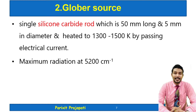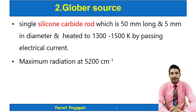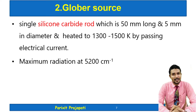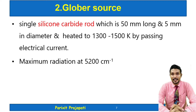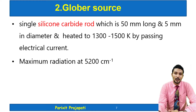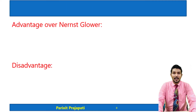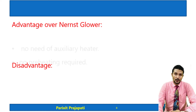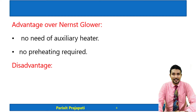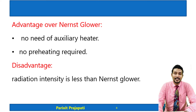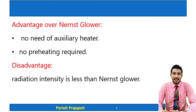The Globar source is a single silicon carbide rod having a length of 50 mm and diameter of 5 mm. It is heated at 1300 to 1500 Kelvin by passing electric current and produces maximum radiation around 1800 reciprocal centimeters. The advantage over the Nernst Glower is that an auxiliary heater is not needed as pre-heating is not required. The disadvantage is that radiation intensity is less than the Nernst Glower.